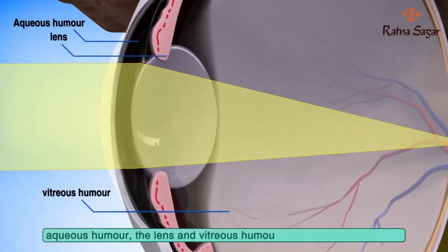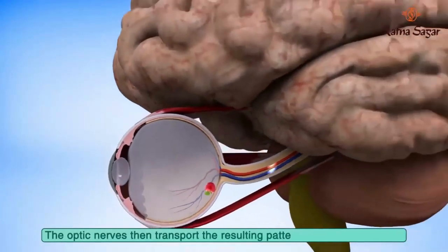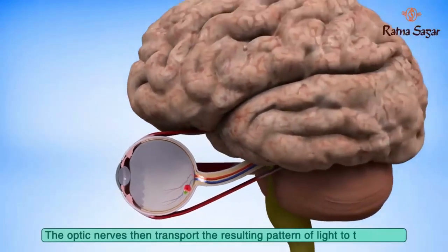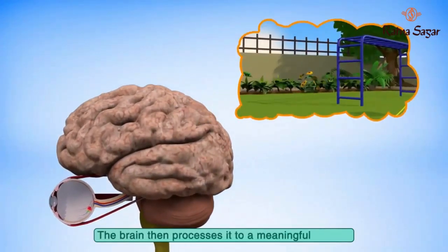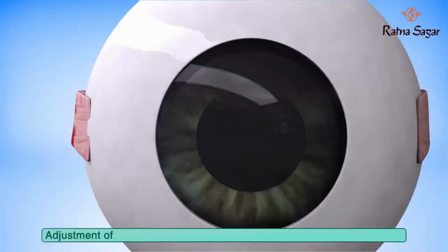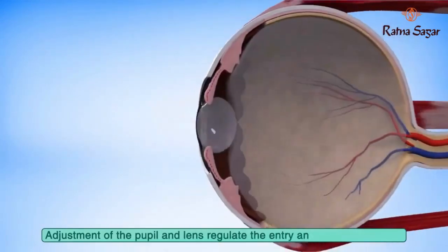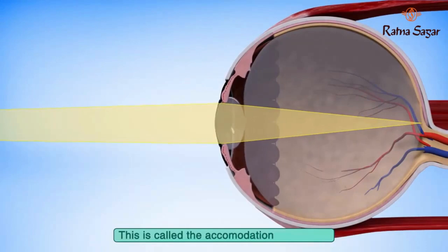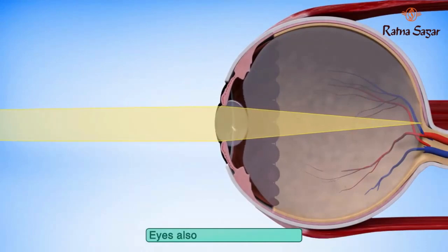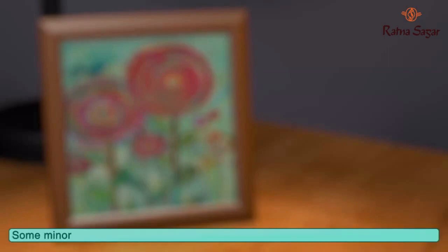The optic nerves transport the resulting pattern of light to the brain, which processes it into a meaningful image. Adjustment of the pupil and lens regulate the entry and focusing of light — this is called the accommodation of the eye.